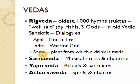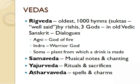The next Veda is Samaveda, which contains musical notes and chanting. In the Yajur Veda, rituals and sacrifices are described — what type of rituals and sacrifices were done during that time. The last Veda is Atharvaveda, where spells and charms are mentioned.